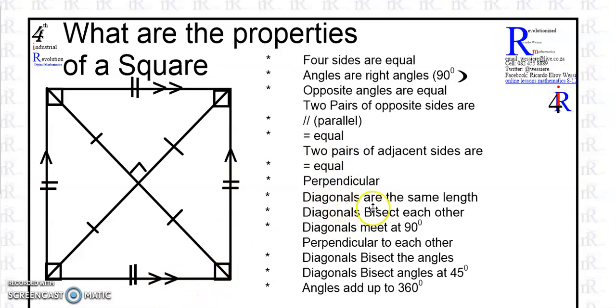The diagonals are the same length. The diagonals bisect each other. The diagonals meet at 90 degrees, meaning they are perpendicular to each other. This diagonal meets that one at 90, so they are perpendicular. The diagonals bisect the angles at 45 degrees.